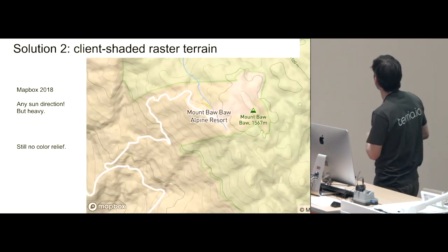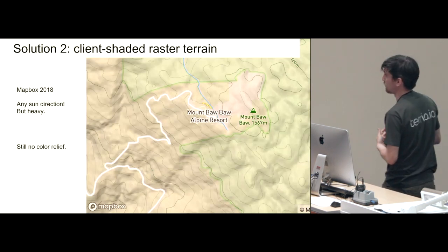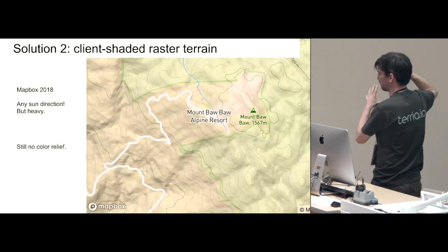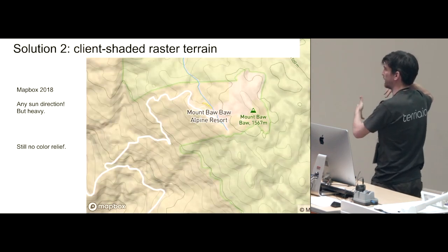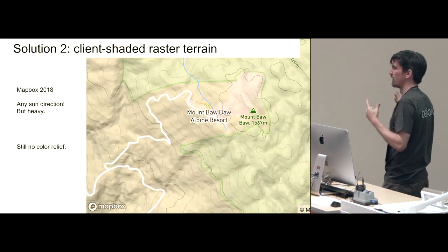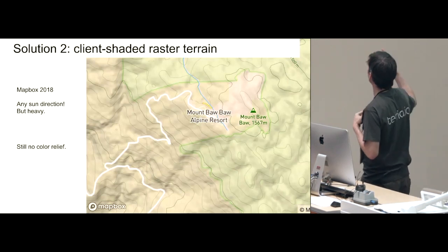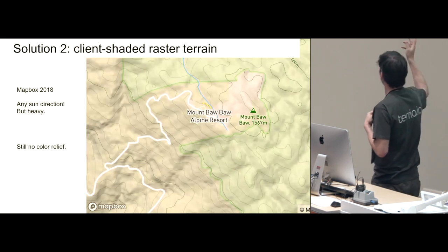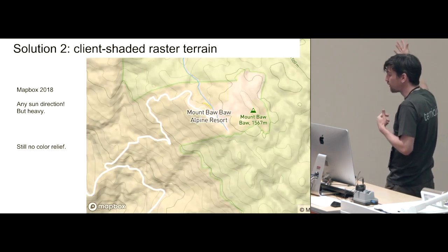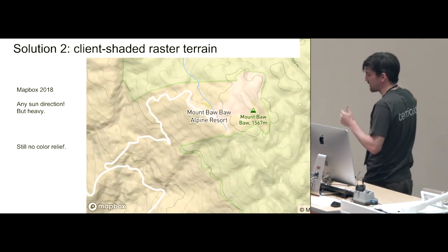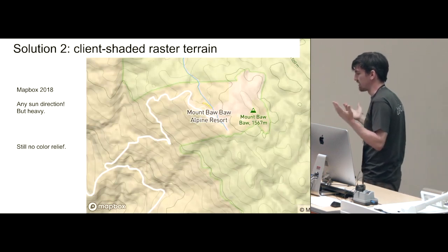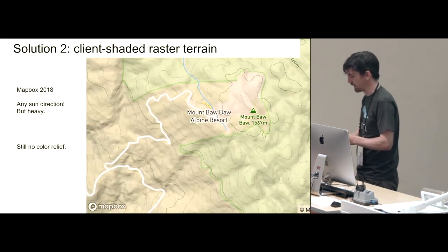More recently, Mapbox has had another go at it and basically given up on pure vectors, saying 'we need rasters.' They now have a full-world raster layer — a digital elevation model — and have implemented hill shading in the browser in Mapbox GL JS. You can set the sun direction to any direction you want and change the colour of light and shade, and you get a fairly decent result. The downside is there's still no colour relief, so I'm still a bit sad about that.